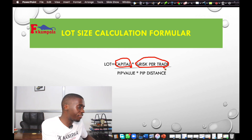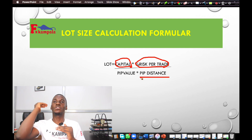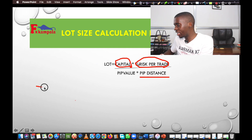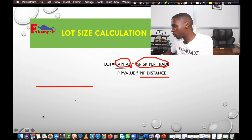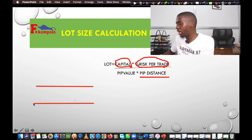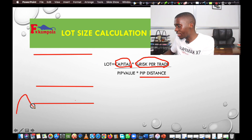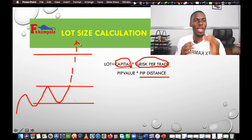Lastly, you need what we refer to as pip distance. Pip distance is the distance from your entry point to where you want to put your stop loss. For instance, if we were in the market and we're going to buy at a certain point, we put our stop loss below that entry and our take profit above. You expect the market to come to that point and then go up. What you always need to first do is know your entry and exit points, and after knowing them, demarcate these points using horizontal lines or pending orders.